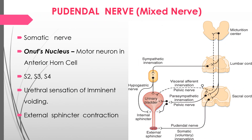The pudendal nerve is the somatic nerve whose motor nucleus is Onuf's nucleus, located in the anterior horn cell of the sacral spinal cord. It senses urethral sensation of imminent voiding and causes contraction of the external sphincter, keeping it always contracted. When the proper time and place for urination arrives, this nerve is inhibited, the external sphincter relaxes, and urination occurs.